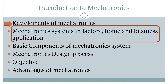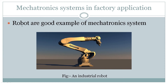Let's start with the mechatronics system in factory application. A very good example for factory application is the robotic arm — I can say this is a good example of a mechatronic system. Nowadays in each and every industry we are using robots for various processes like welding, painting, and assembly. This robotic arm is a good example of a mechatronic system, as we will see in the next slide.